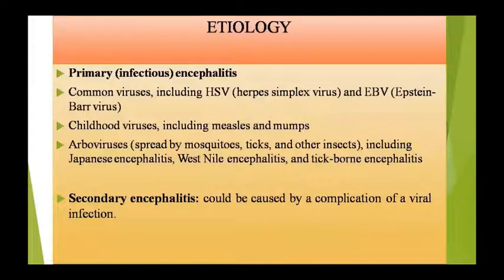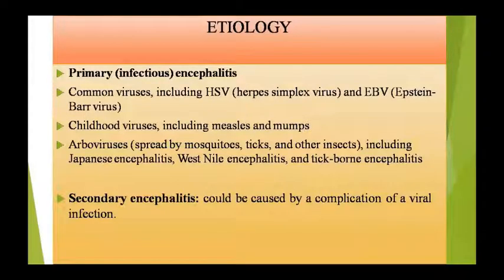Arbo virus से होने वाले encephalitis में जैसे Japanese Encephalitis, West Nile Encephalitis, Tick-Borne Encephalitis आते हैं। Encephalitis Odisha और UP में भी काफी देखा गया था — जहाँ बच्चों की मौत हुई थी, जिसका actual reason encephalitis था। Secondary encephalitis में infection body में कहीं और हुआ था और उसके complication की वजह से brain तक पहुंच गया।